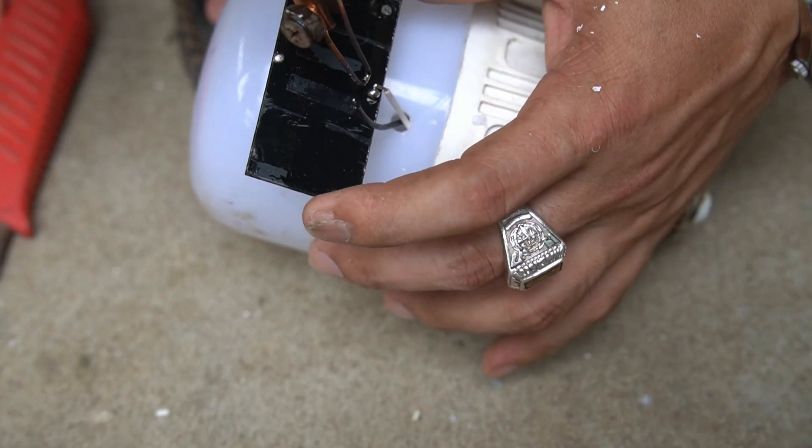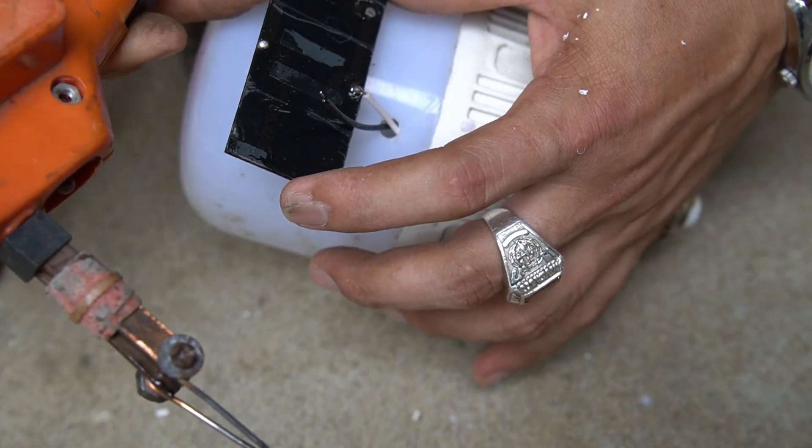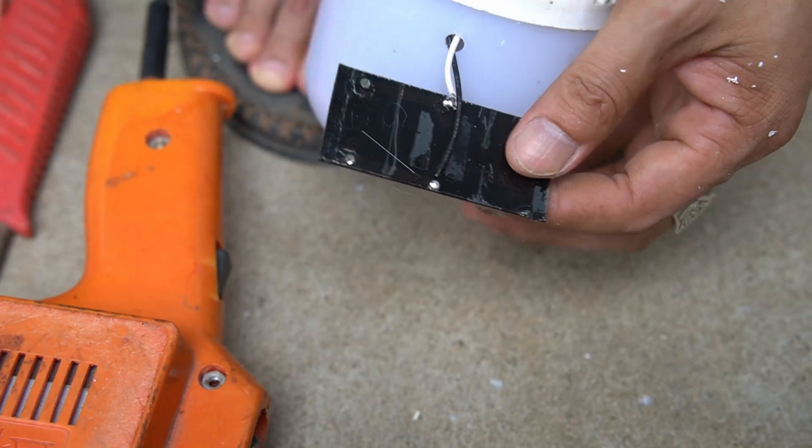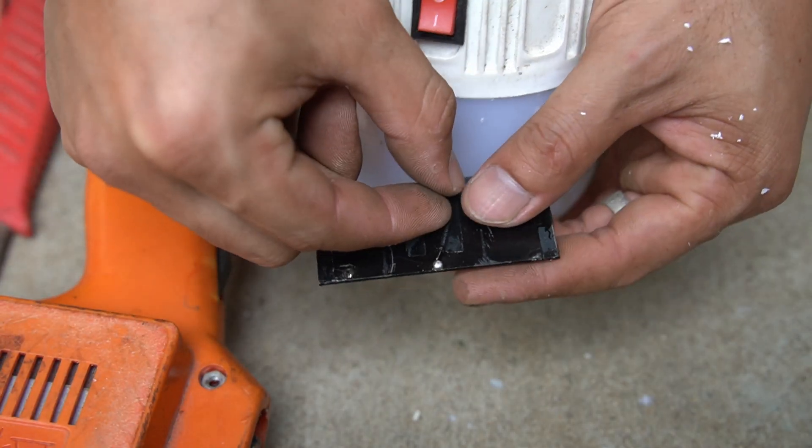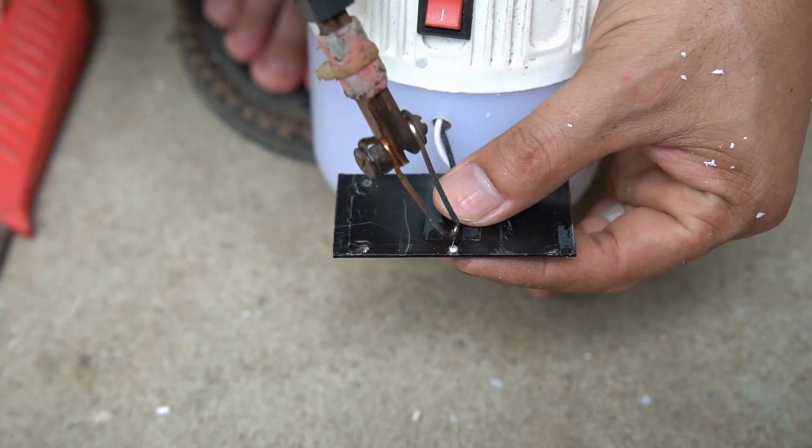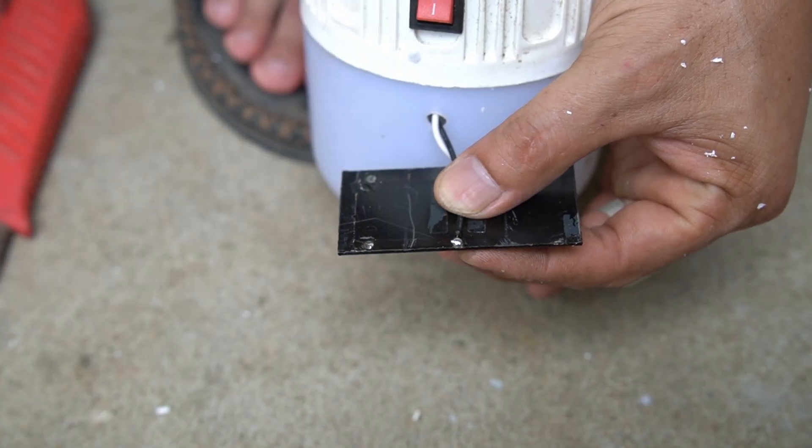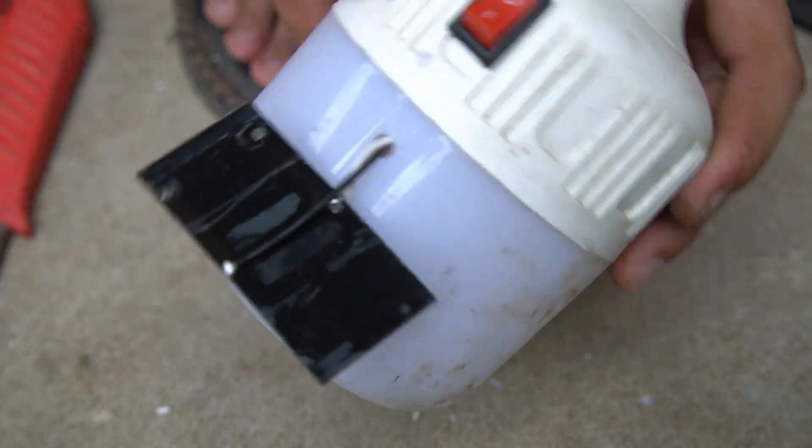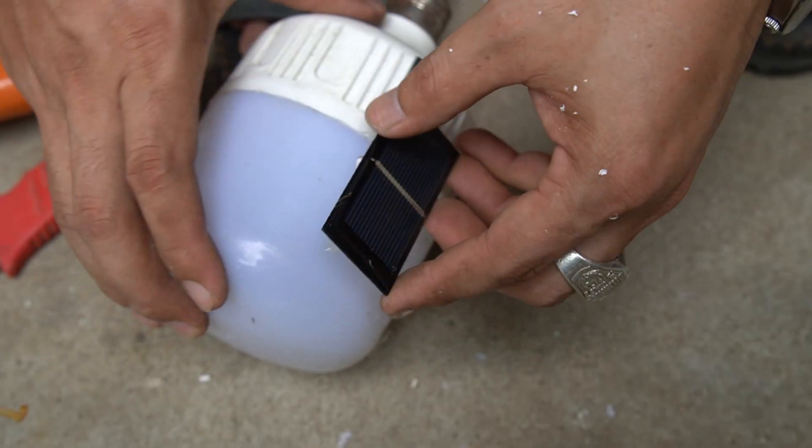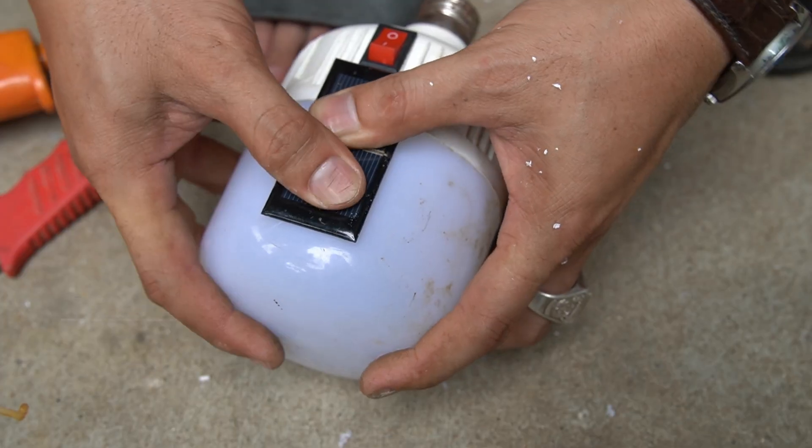Now use your soldering iron to connect the wires to the solar panel. Do it with caution. The final step is to use special glue and attach the solar panel to the cover of the light bulb.